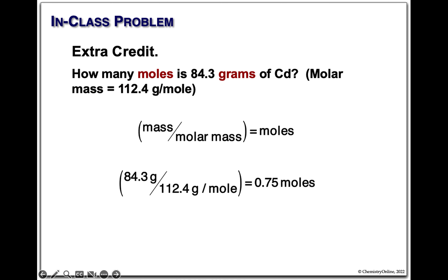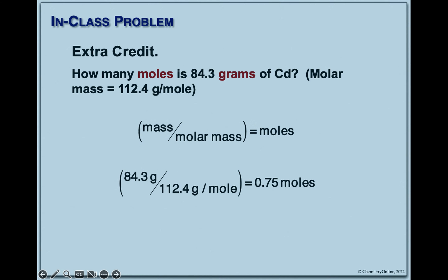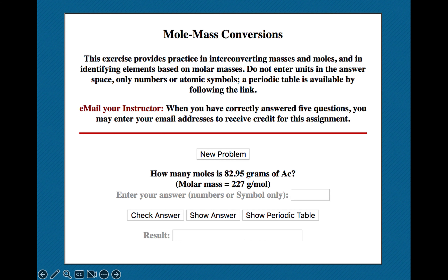Extra credit: how many moles is 83 grams of cadmium? Same problem as before — mass divided by molar mass. Mass is 83, molar mass is from the periodic table. Show your work on extra credit. We get 0.75 moles. Your exam will have 20-point questions and a five-point extra credit — you will not get the same two questions.